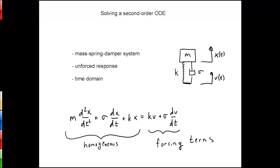For this system, we have a mass that is supported by a spring with spring constant k, and it's also affected by a viscous damper with a damping coefficient that we've called sigma. The position of the mass is defined as x of t from its equilibrium position, and we also can have an input which we call u of t — for example, in an automobile, the position of the axle as it moves up and down as you travel down a bumpy road.